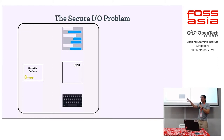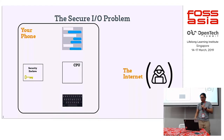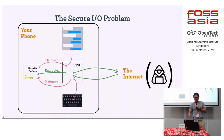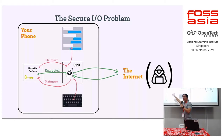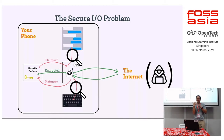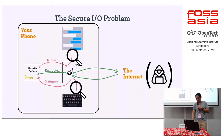To illustrate the problem: a schematic view of a phone has a keyboard, display, CPU, and perhaps a security enclave. You enter your password in plaintext, it goes into the security enclave, gets encrypted, sent out to the internet — great, hackers can't get it. But when a hacker gets into your CPU, your keys are safe — yet they can still read the contents of the screen and keyboard. As you type your password, the computer sees it in the clear the whole time. That's the secure IO problem.